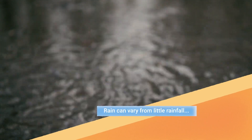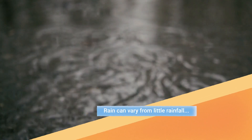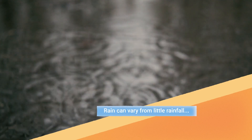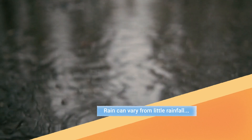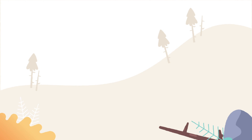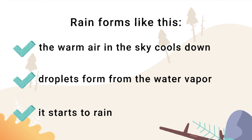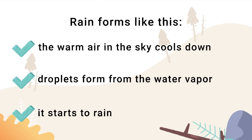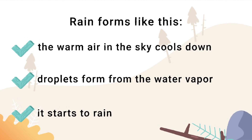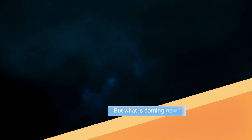Rain can vary from little rainfall. Rain forms like this: the warm air in the sky cools down, droplets form from the water vapor, and it starts to rain.